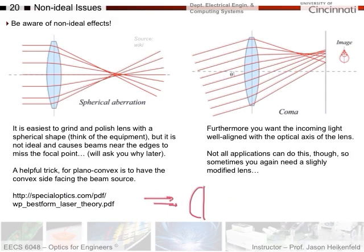At this point we've assumed all the light comes in parallel to the surface. If you come in off-angle, you also get an effect called coma, where it doesn't all focus down to a single point at the focal plane. Not all applications need to worry about this, but sometimes you have to be careful — you'll need a slightly modified lens if you're coming in off-axis like this.